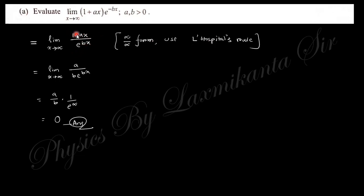Applying L'Hôpital's rule means taking the derivative of the numerator and denominator separately. The derivative of (1 + ax) with respect to x gives just a. The derivative of e to the power bx gives b·e^(bx). Now putting x equals infinity, e^(bx) goes to infinity in the denominator, so this finally gives you 0. The answer to this question is 0.